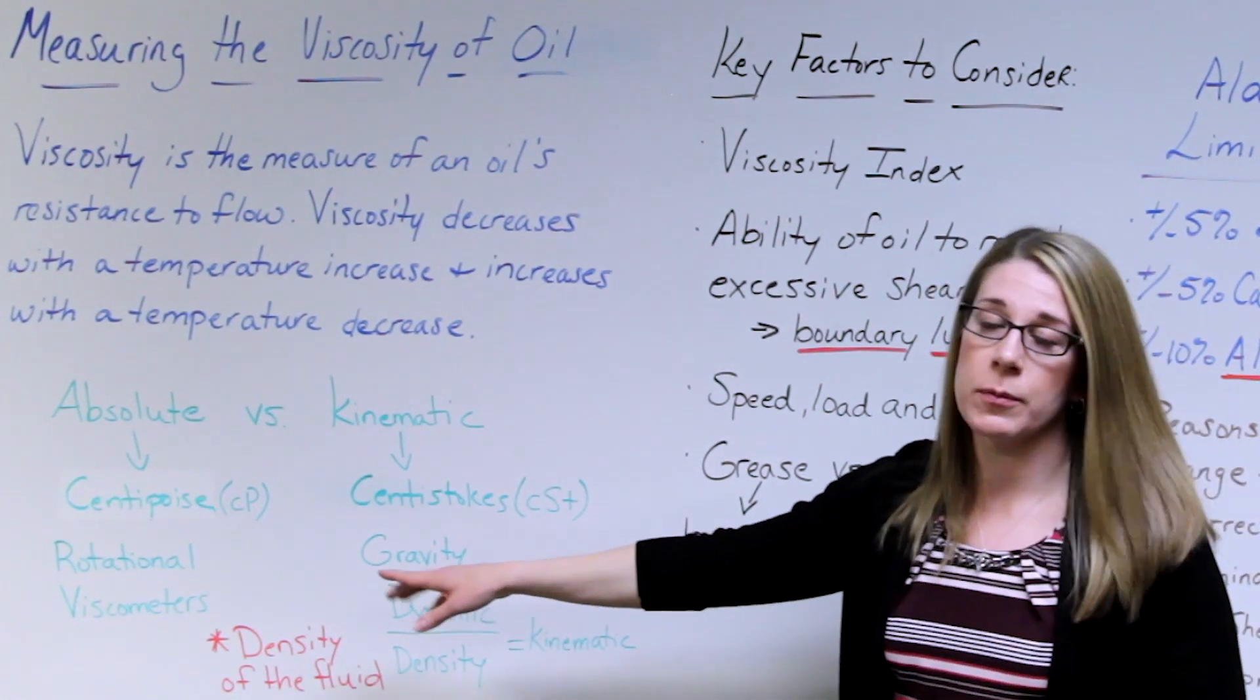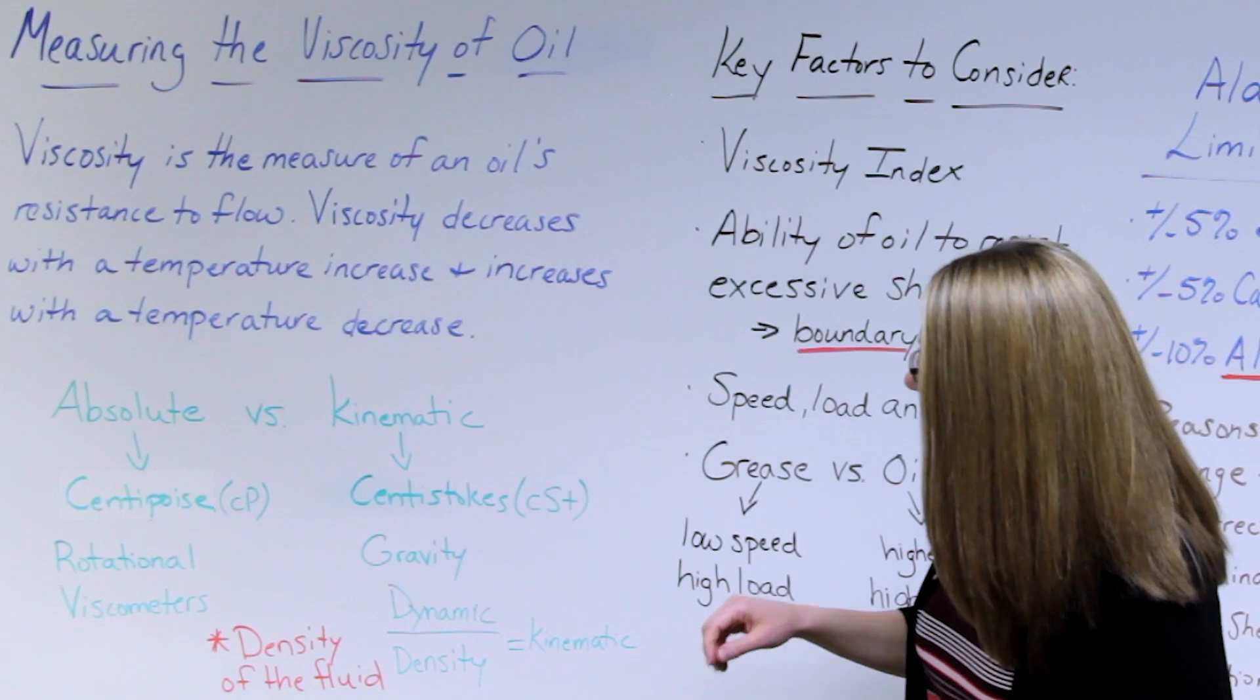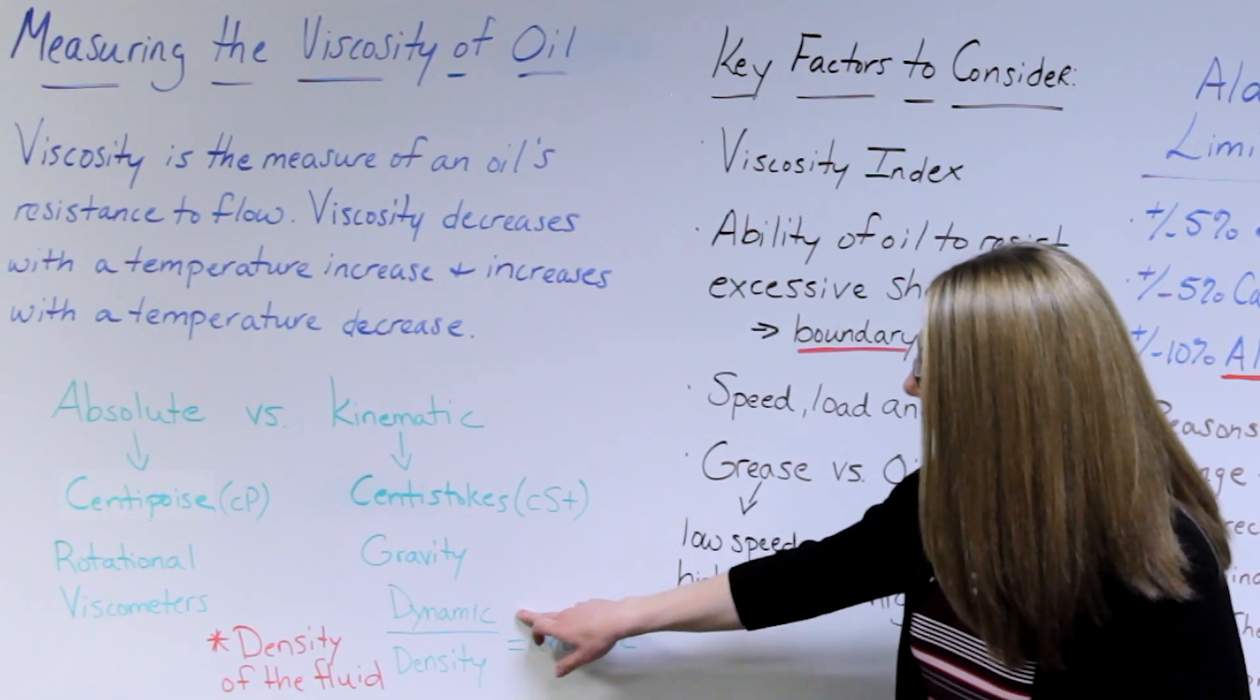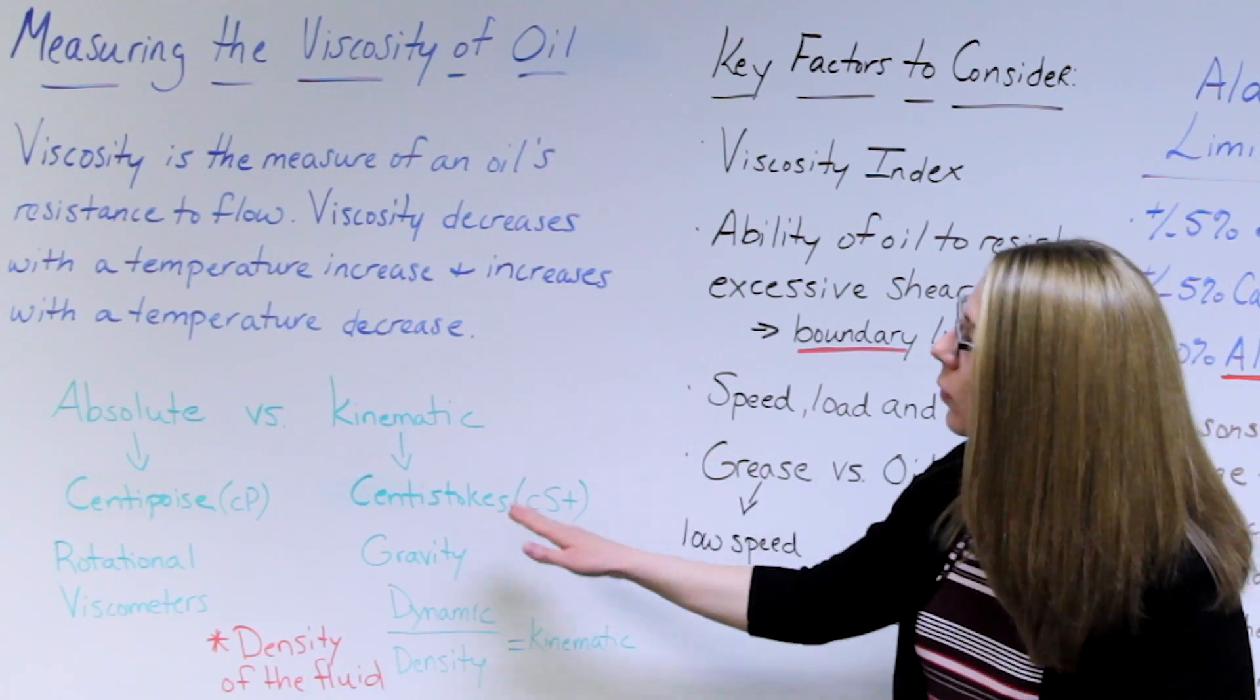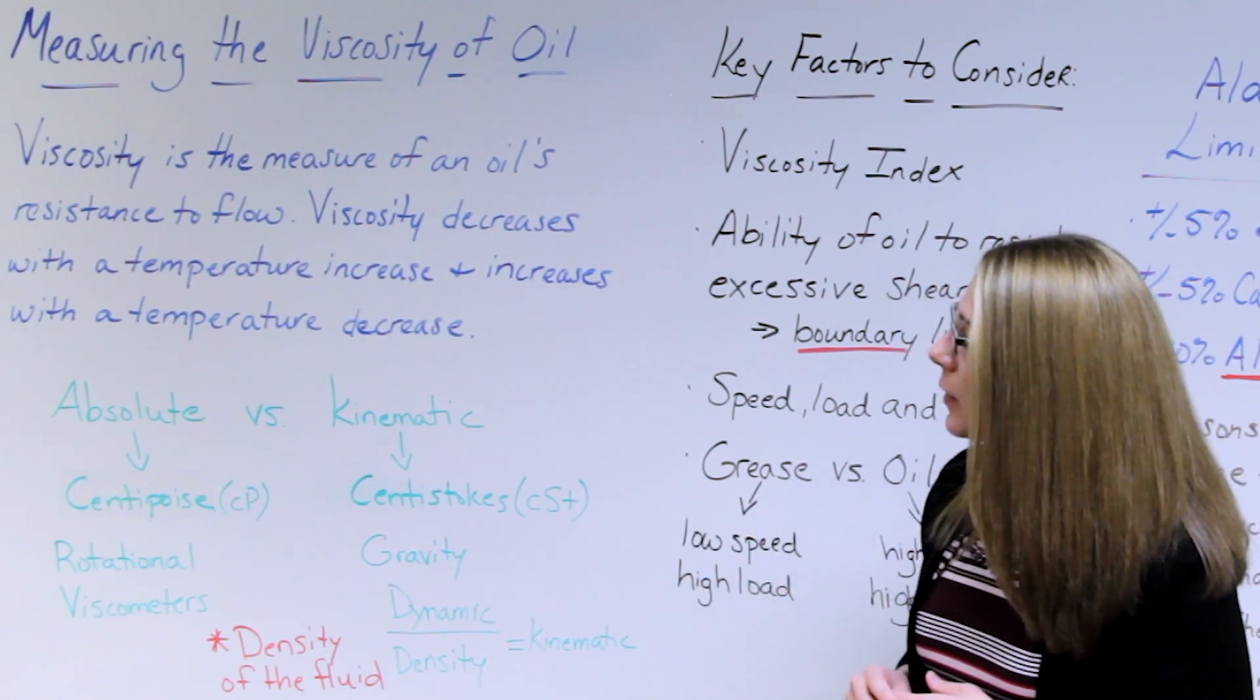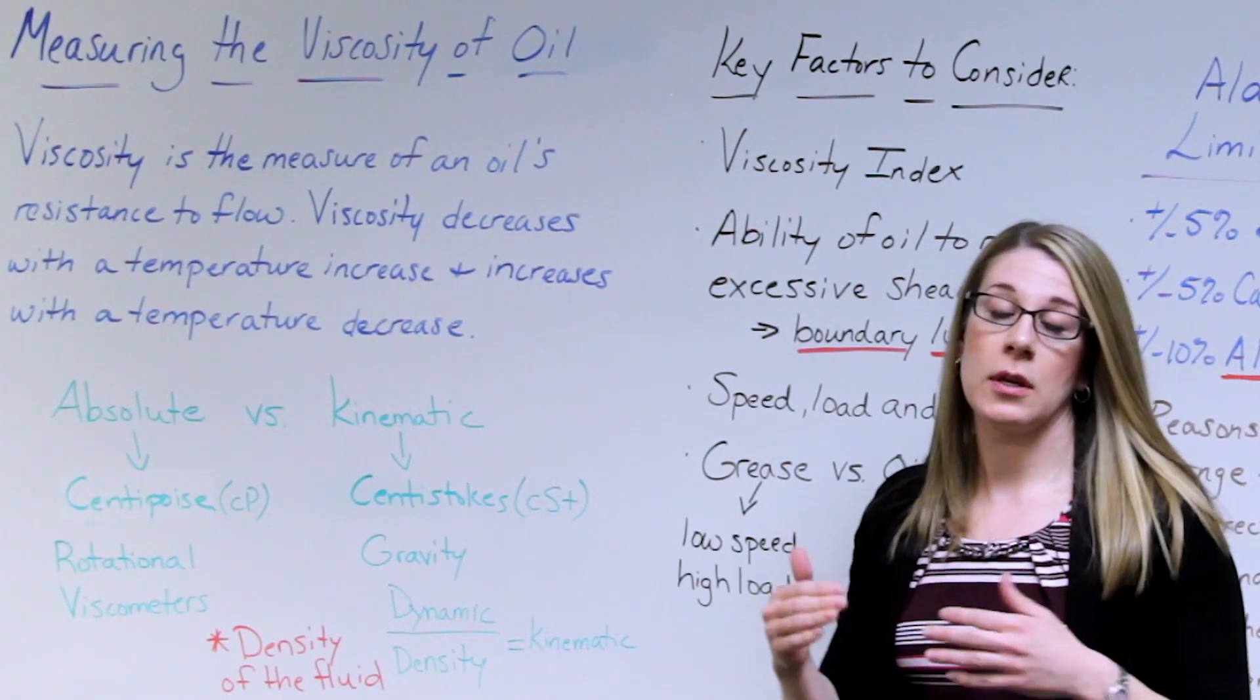An easy way to do a conversion between centipoise and centistokes is take the dynamic viscosity divided by the density to get the kinematic viscosity. But that's an important distinction to know and making sure that you're trending using the right measurements.